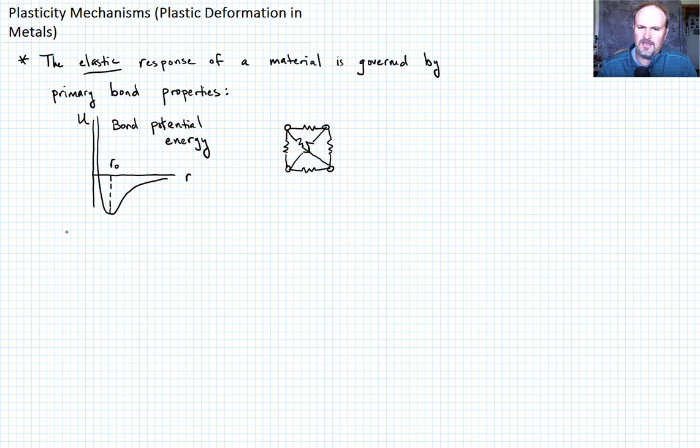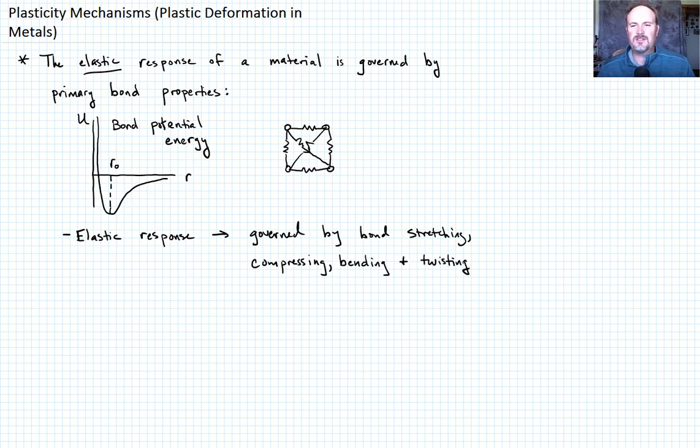So we can write that an elastic response is going to be governed by bond stretching or compressing. And we should probably also say depending on if it's covalent or not, we could have bending and twisting as well. So the key feature of all of this, and hopefully you see this, if those were actually springs and not sort of this bond, but if they were just true springs, the moment that you pulled the load off of this four atom structure, it would go immediately back to its equilibrium position, to its reference state. And that's the key feature of elastic behavior. So just say upon unloading, the atoms are going to go back to their equilibrium positions.